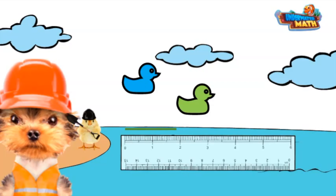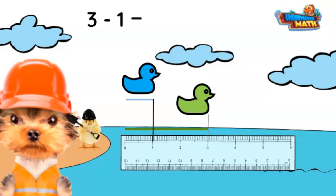The model shows how far green duck and blue duck swam. To find the difference between the number of inches the two ducks glided, we start by finding the measurement of each duck. The blue duck glided one inch and the green duck glided three inches. We could find the difference between the two numbers by subtracting three minus one.